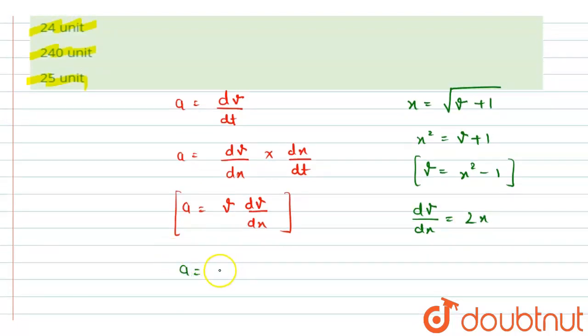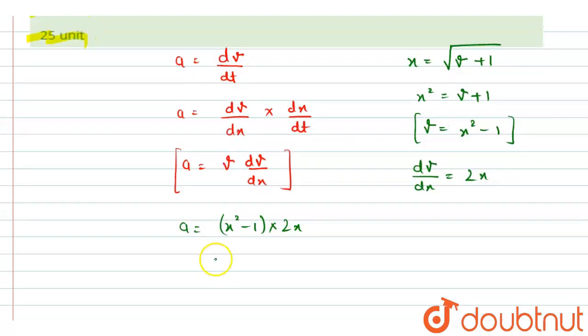To put in the expression for acceleration, we have x squared minus 1 multiplied by 2x. Right, so this will be acceleration will be equal to 2x times x squared minus 1.